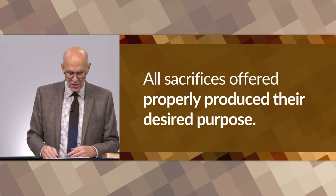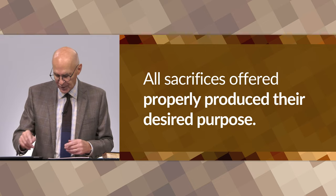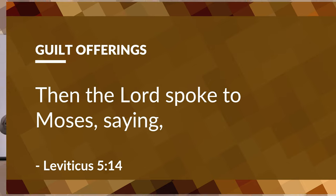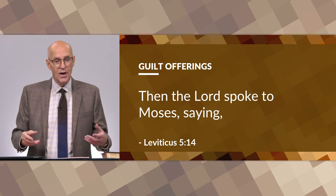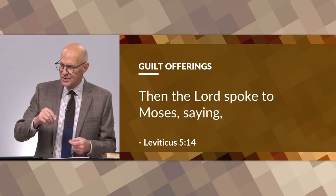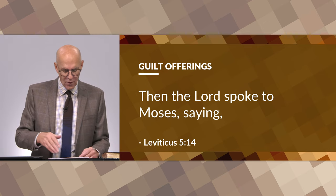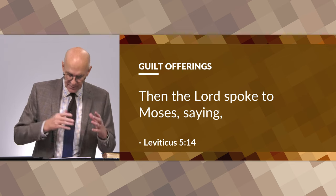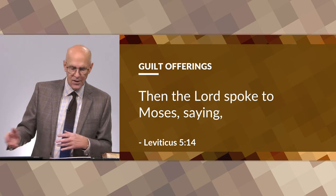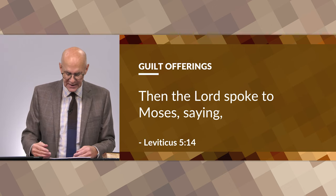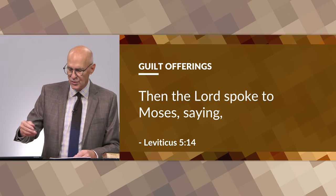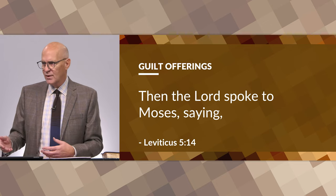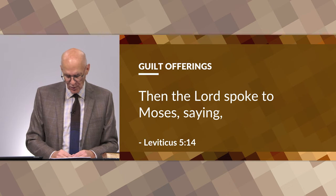The source of the law regarding the guilt offering is found in chapter 5, verse 14: 'Then the Lord spoke to Moses, saying.' This formulaic introduction not only provides the source — God himself, a divinely inspired source — but also indicates that a new topic is about to be introduced. Whenever you read 'Then the Lord spoke to Moses, saying,' a new topic is being introduced. The new topic will be the guilt offering.